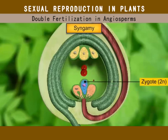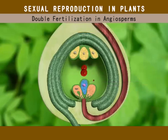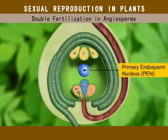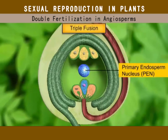Meanwhile, the other male gamete moves towards the two polar nuclei and fertilizes them to produce a triploid primary endosperm nucleus. This is called triple fusion.